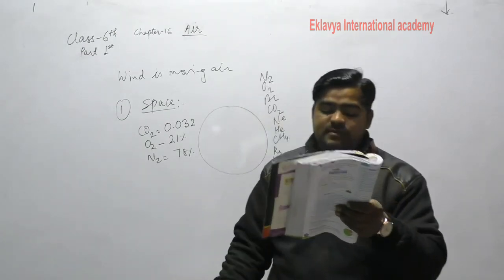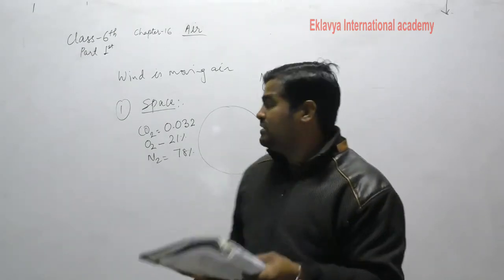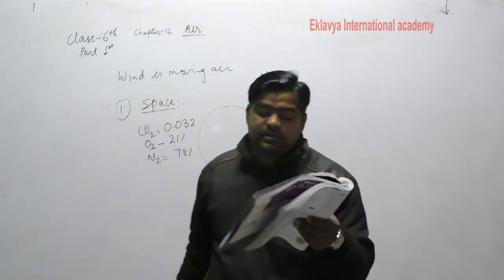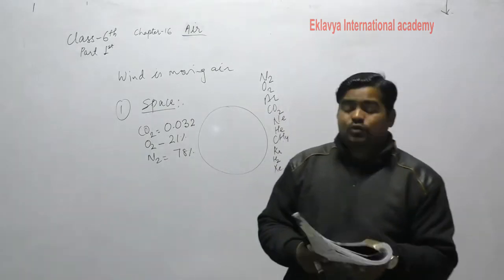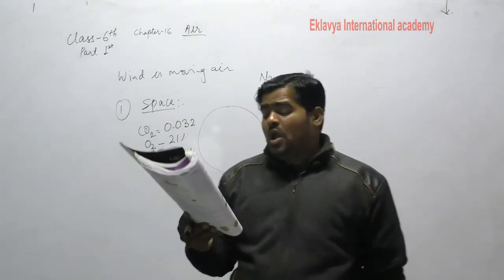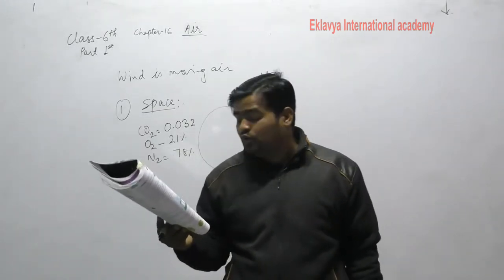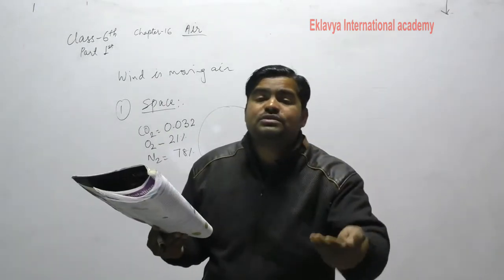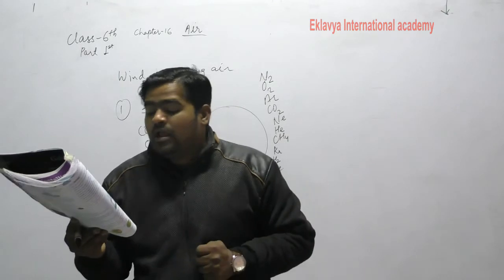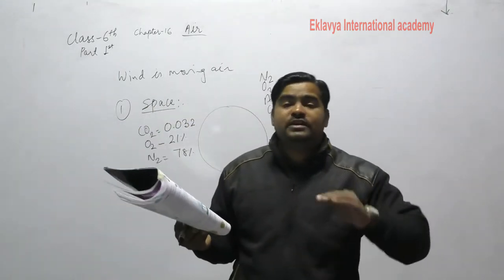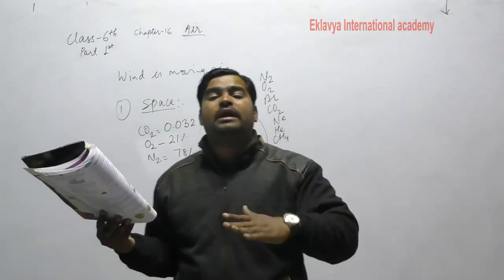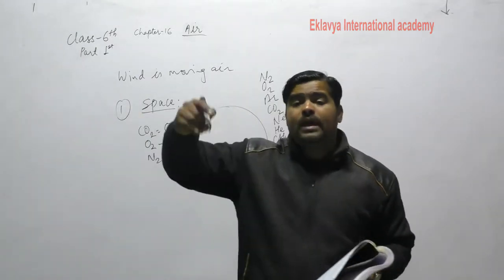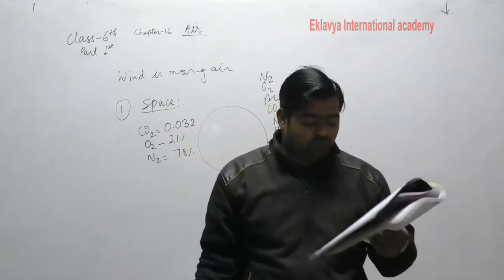Nitrogen makes up 78 percent of air. It is not directly used by animals including human beings. It is first converted by microorganisms into its compounds like nitrates or nitrites, which are then used by the plants.